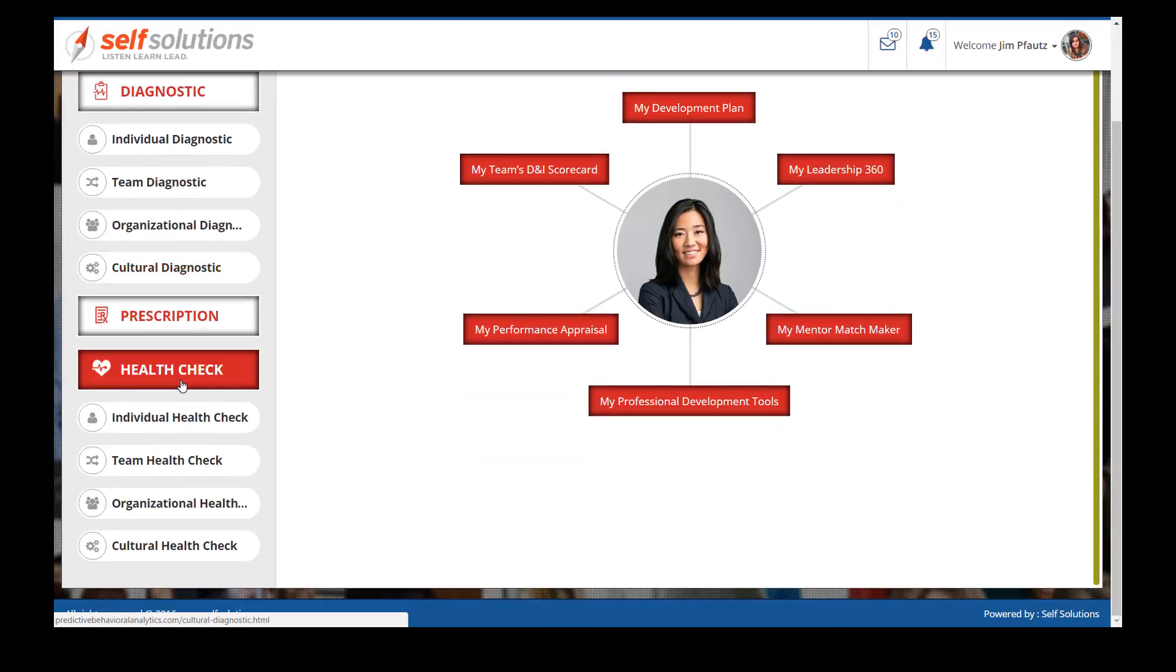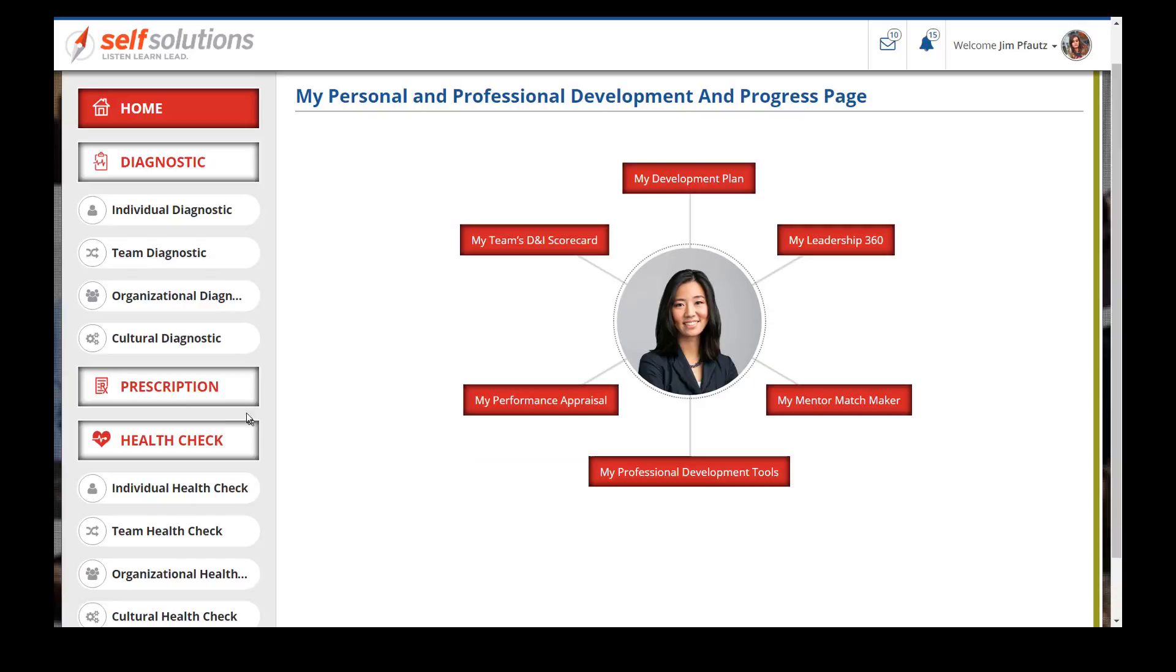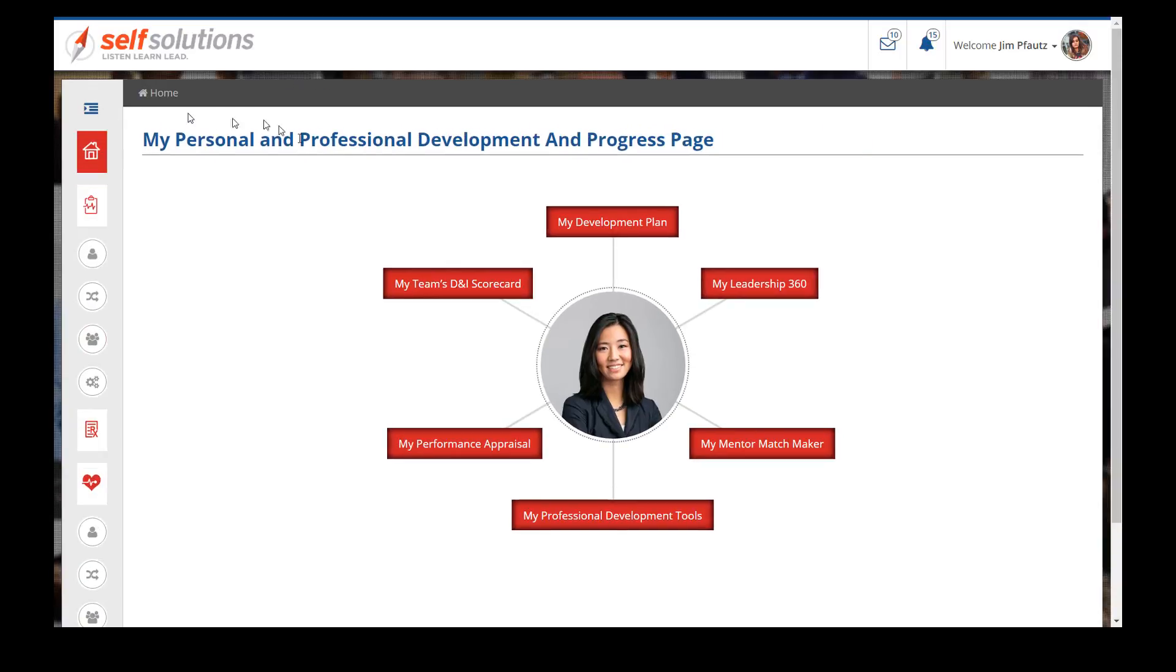And those are for the organization. And then when you get into the prescriptions, that's really what things like the development plan or the leadership 360, the mentor matchmaking. So what we have here is these individual development things all leading up into the team's scorecard. So there's two aspects of what we do.